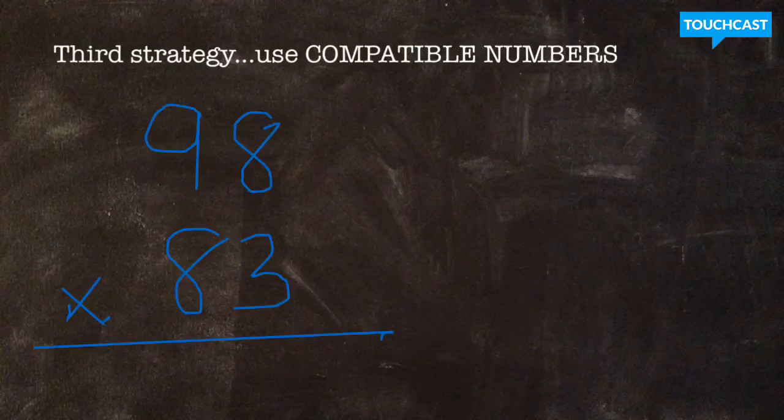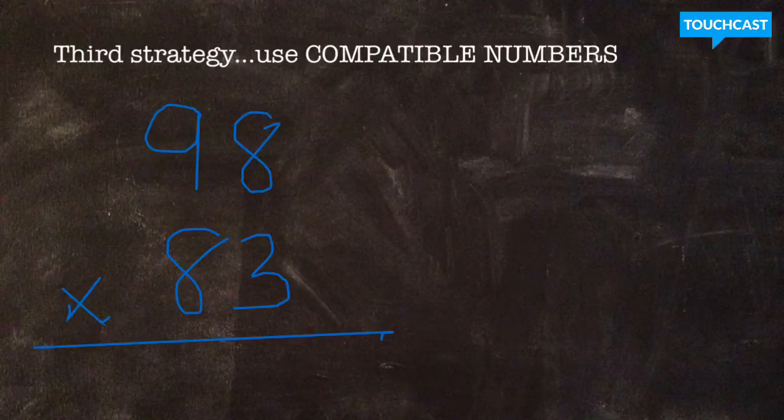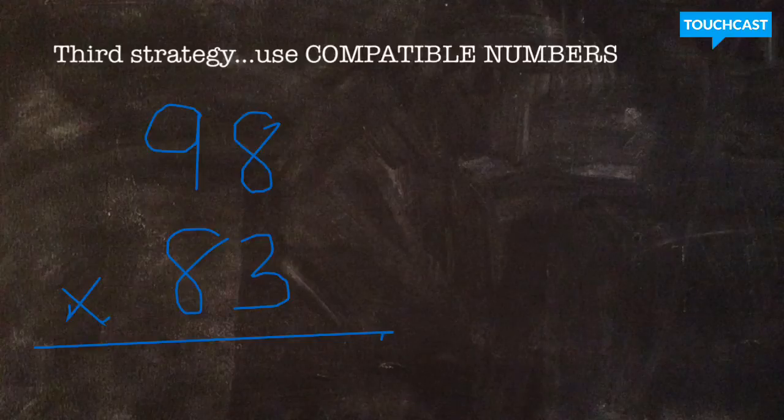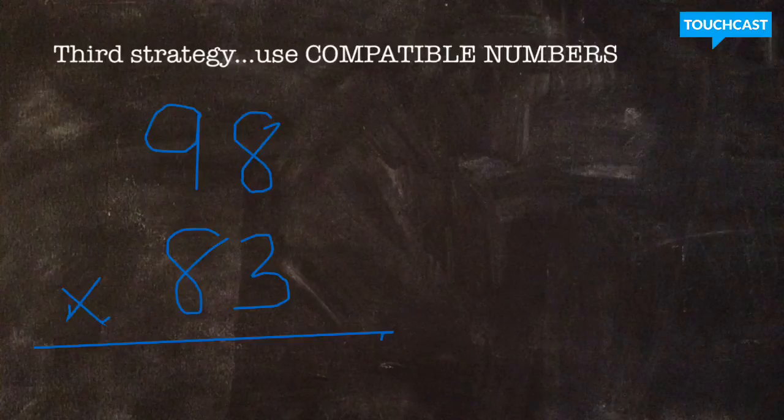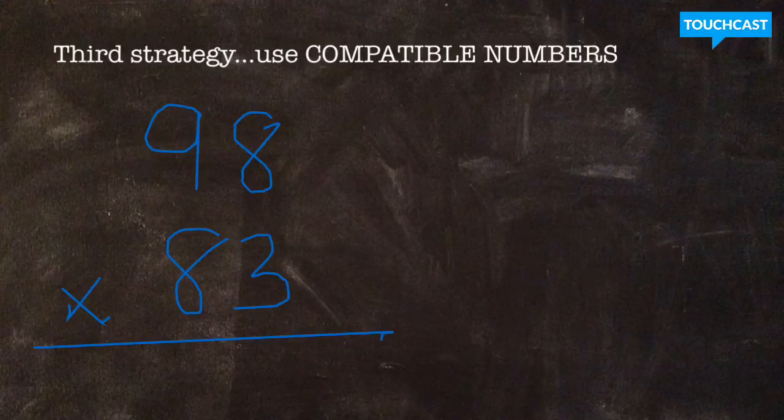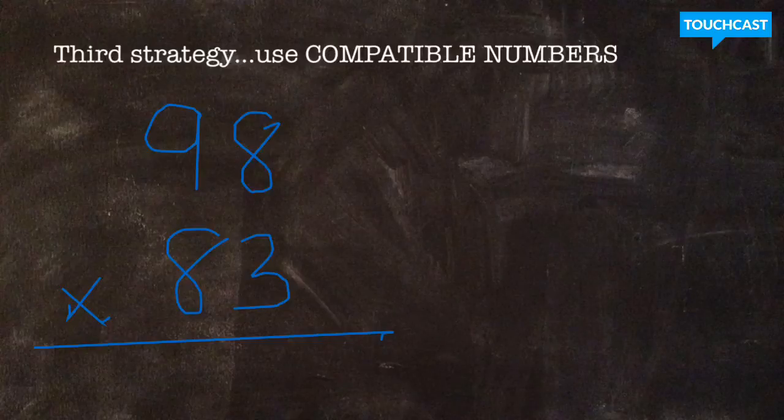The third and final strategy that we're going to talk about is rounding to use compatible numbers. Now, if you think about the word compatible, it means things that work well together. So I'm not going to tell you you round one factor or both factors. I'm not going to tell you that you should always round up or round down. What I'm going to tell you is that you have to use your knowledge of factors to round your numbers to compatible numbers that you can multiply easily in your head. So I'll show this to you using the equation above, 98 times 83.